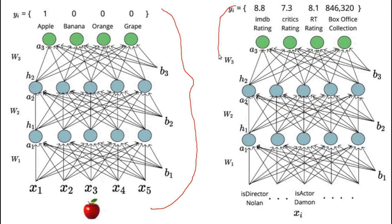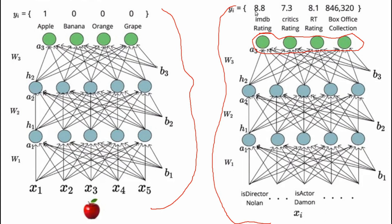This is a regression task. There are attributes in the cinema — the director, the actor. This is the output of the cinema with four values. The four real values are: 1. IMDB and critics rating. 2. Box office collection. 3. Real value output. These are regression tasks.